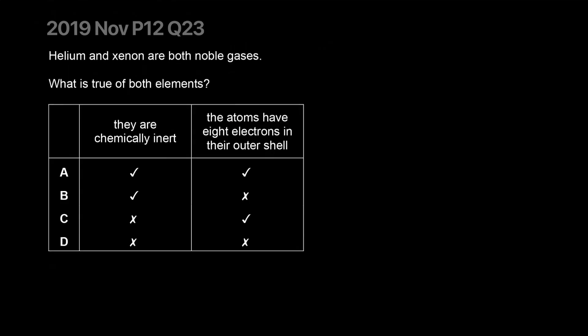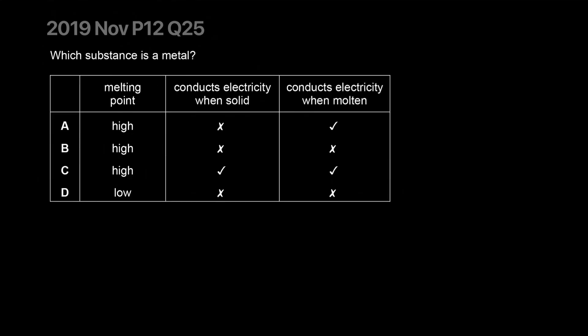Helium and xenon are absolutely inert, but they do not both have eight electrons. Helium is a noble gas with only two electrons. So the correct answer is B. Which substance is a metal? It has to conduct electricity as a solid - only metals will do that. Correct answer is C.